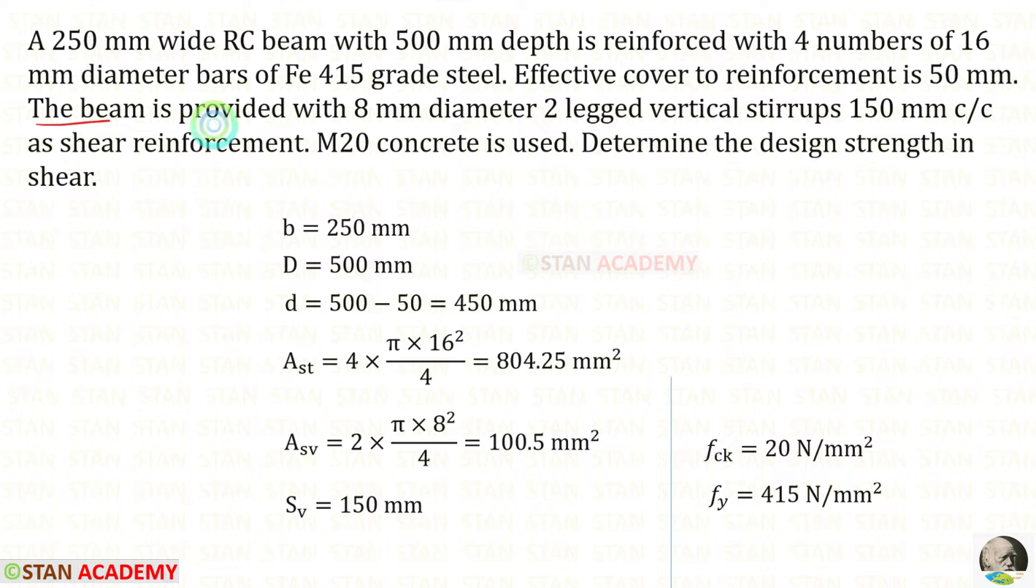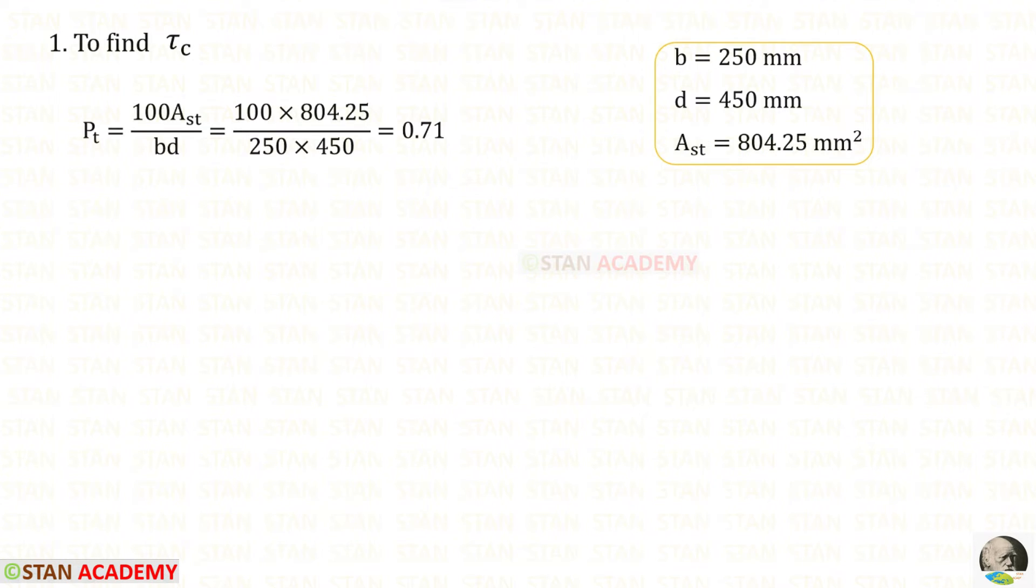The beam is provided with 8 mm diameter, two legged vertical stirrups. Using that, we can find area of the vertical stirrups ASV, we will get 100.5 mm square. 150 mm center to center, the spacing of the vertical stirrups is 150 mm. M20 concrete is used, FCK is 20. Determine the design strength in shear.